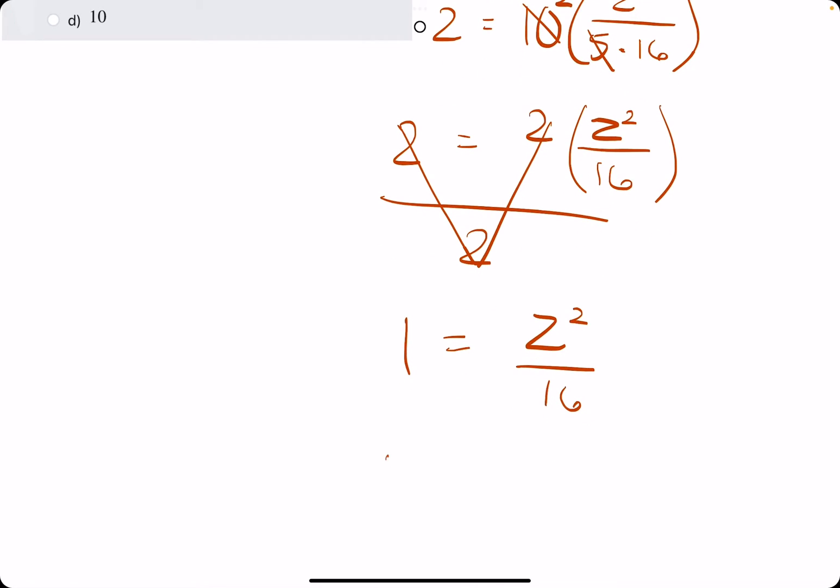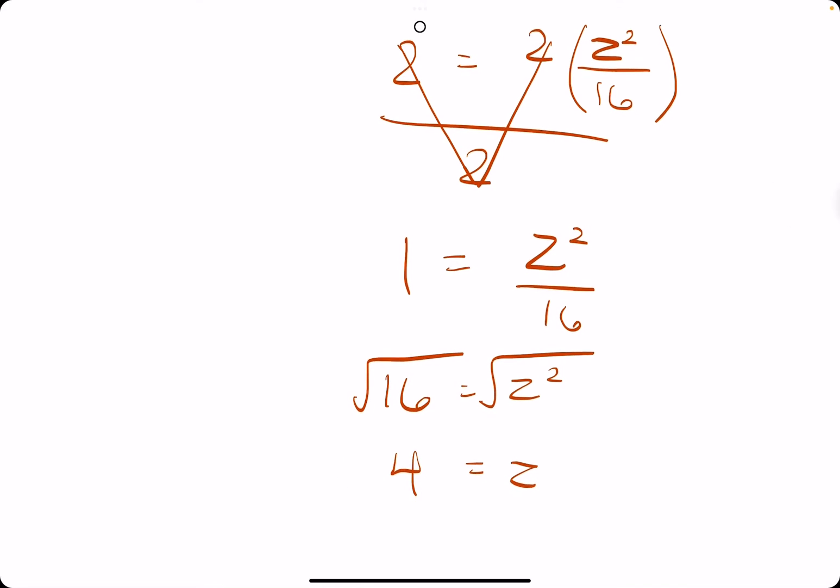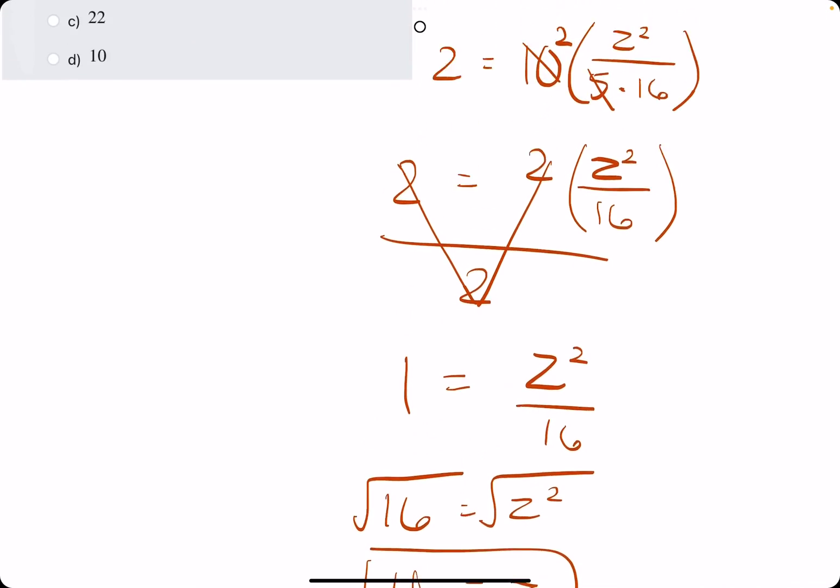Giving us 16 equals Z squared, which means when we take the square root of both sides, we will get technically plus or minus 4, but they will probably just use the positive 4 in this case.